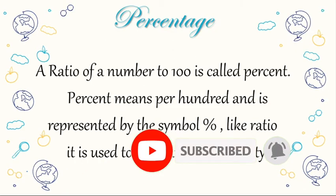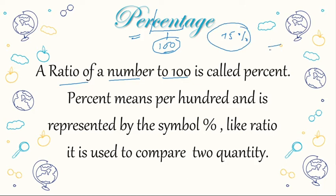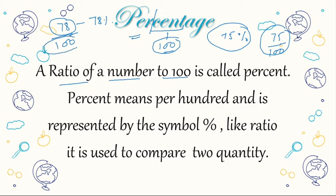So let's start. First of all, what do we mean by percentage? Percent means per 100. So the ratio of a number to 100 is called percent. Percent means per 100 — it means 1/100th part — and it is represented by the symbol '%'. This is how we represent percent.